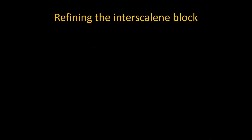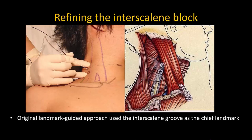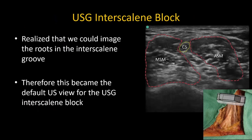This next section deals with a rationale for performing a superior trunk block instead of a conventional interscalene block. The original landmark-guided interscalene block used the interscalene groove as a chief landmark, hence the name. The needle was advanced towards the transverse processes to contact the C5 and C6 roots. When ultrasound was introduced, we realized we could visualize the C5 and C6 roots in the groove instead of blindly aiming for them, and so this became the default view and approach.